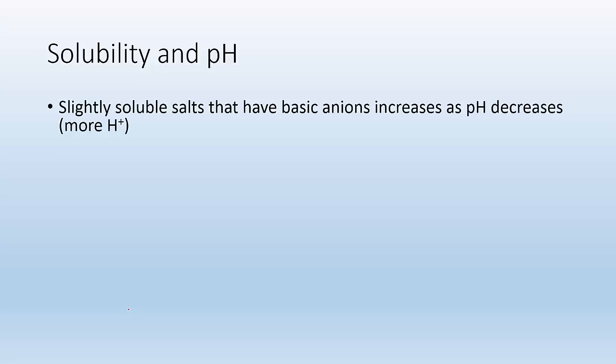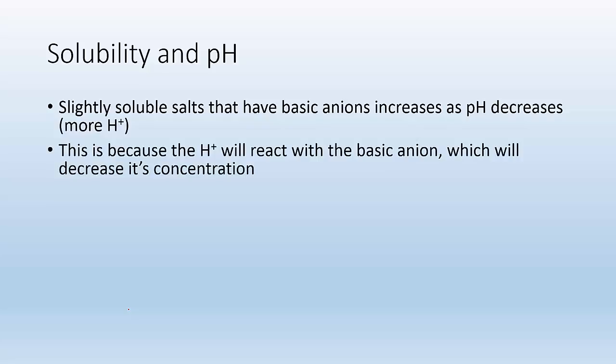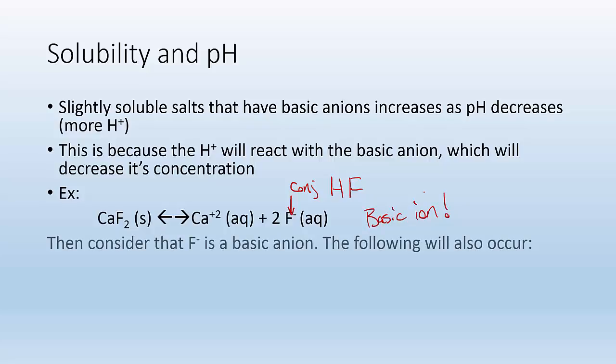Alright, solubility and pH. Slightly soluble salts that have basic anions increases as pH decreases with more H plus concentration. So let's take a look. This is because the H plus will react with the basic anion, which decreases its concentration. For example, if I had calcium fluoride, it's going to break up in Ca+2 and F-. Now I know that F- is the conjugate of a weak acid, which tells me that it is a basic ion. Which means this is also going to occur. If I get fluoride ion, it's going to react with H plus and become HF.